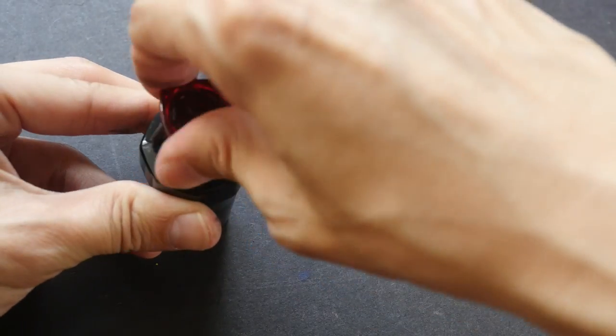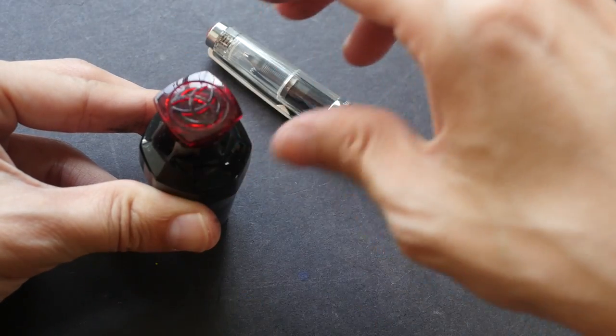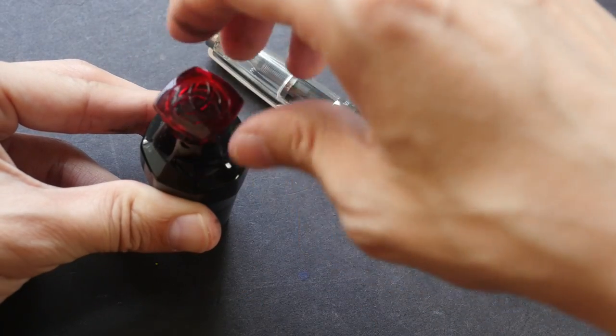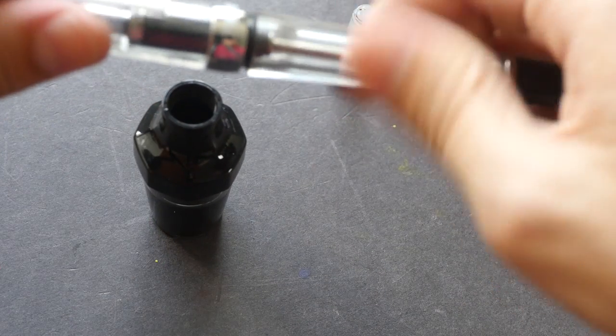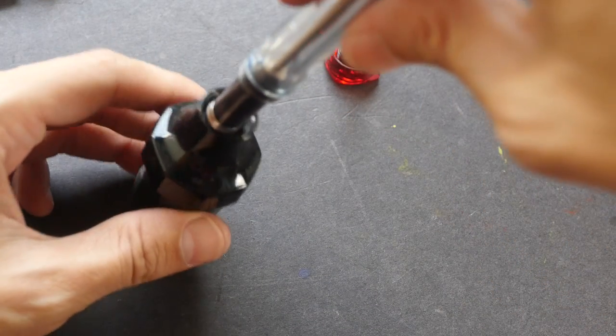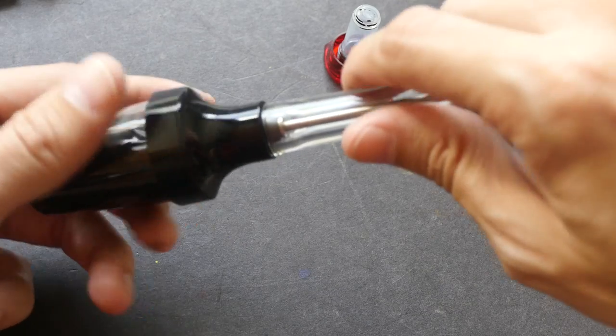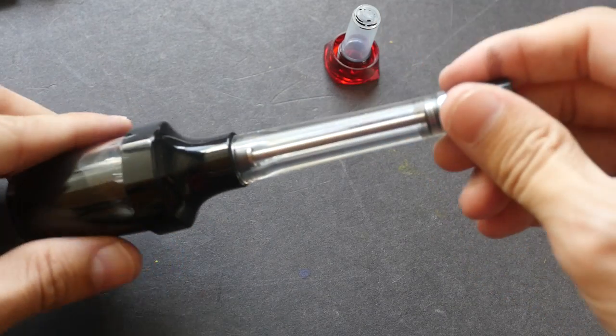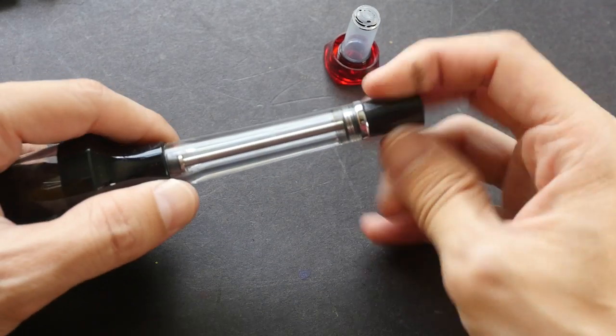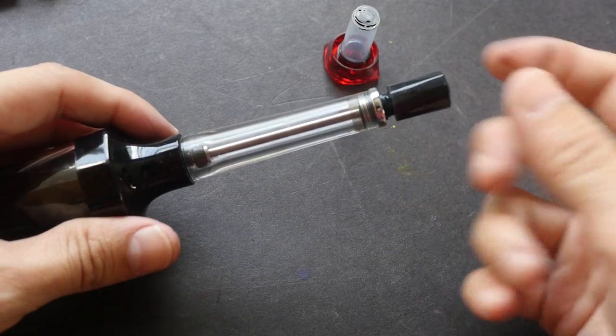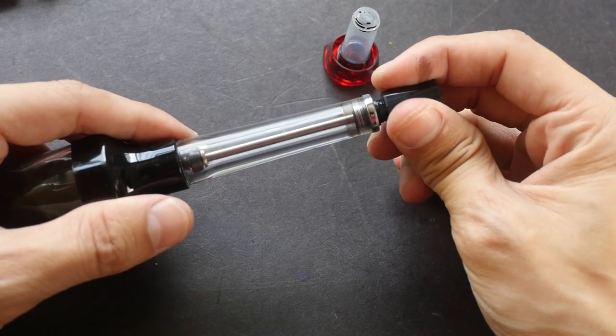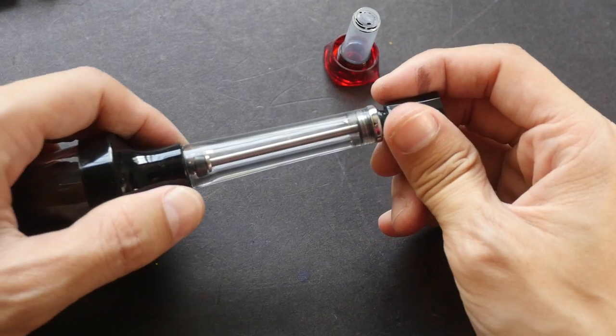Now to refill this pen you can either use a normal ink bottle or you can get this accessory which is sold separately. So you can just screw this into the ink bottle like this. Make sure it's tight. And you can use the plunger to suck the ink into this area here. This is the fun part.